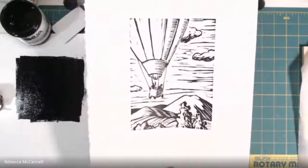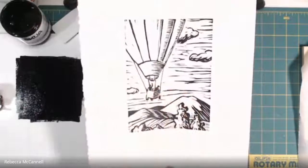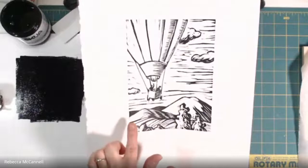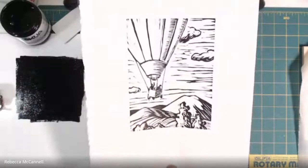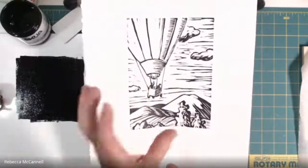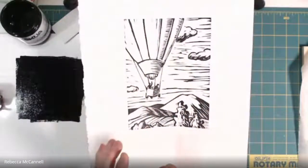The ink will stay wet for quite a long time, so you want to set it someplace where it won't get rubbed across. If you're in a rush to speed up the drying of the ink, you can dust it really gently with a little bit of baby powder.